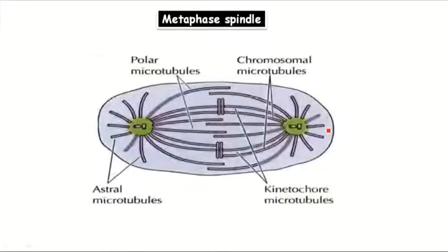The centrosome, which duplicates during interphase, moves to the opposite pole of the cell, and this serves as the two poles of the mitotic spindle.